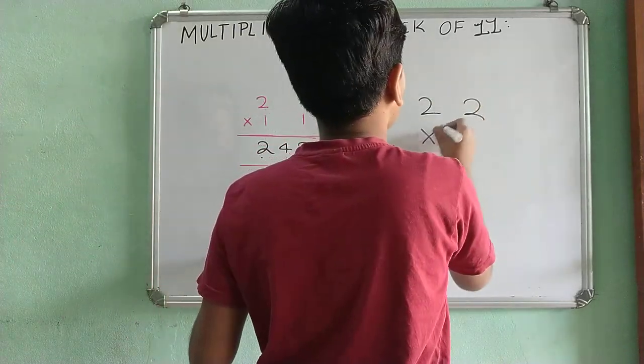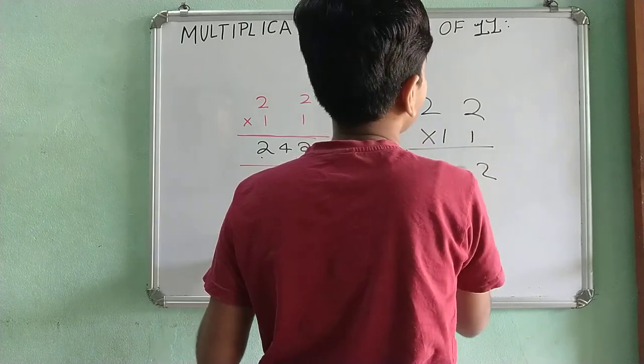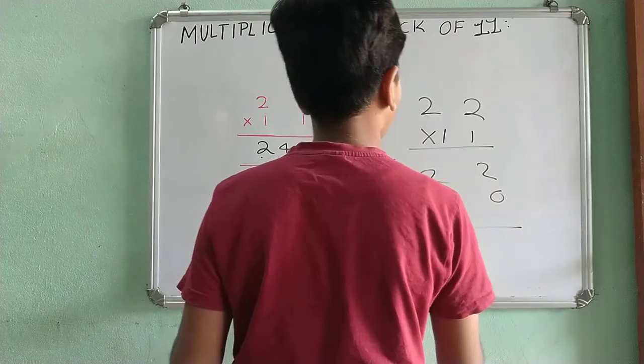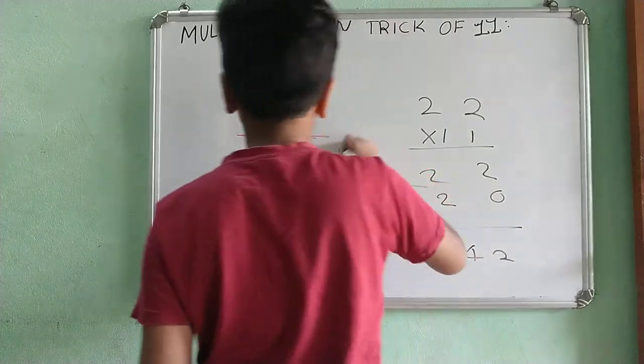So 22 multiplied by 11 will be 2 and 2, 2 and 2. Is it 242? Yes, it's 242.